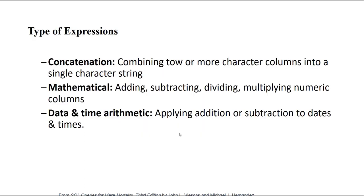The second category of expressions includes concatenation, mathematics, and date/time arithmetic. Concatenation means combining two different columns and putting them under one new column — we call it CONCAT or concatenation. Mathematical expressions involve addition, subtraction, division, and other operations on numerical values. For example, multiplying the number of items by the price to calculate the value of each item in stock.